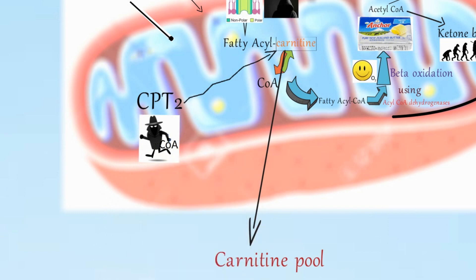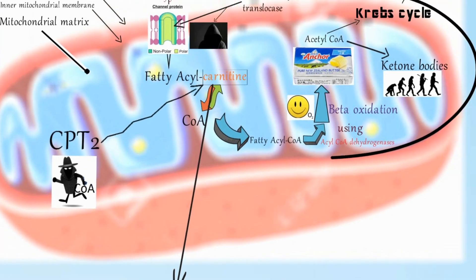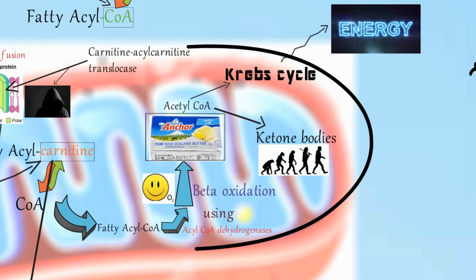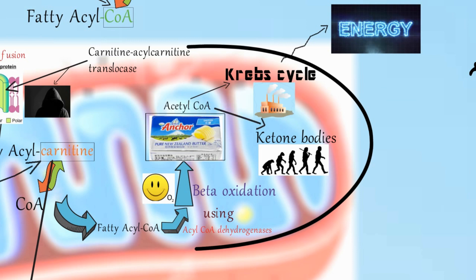CPT2, the third thief, removes carnitine from fatty acyl-carnitine and puts back CoA to the fatty acid, forming fatty acyl CoA. This fatty acyl CoA is then converted to acetyl CoA — like anchor butter — which is distributed to ketone bodies and also to the TCA cycle, the metabolic factory.